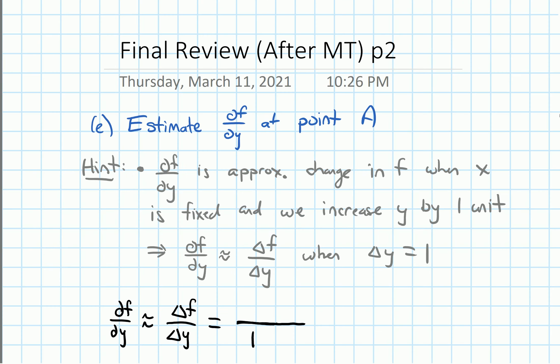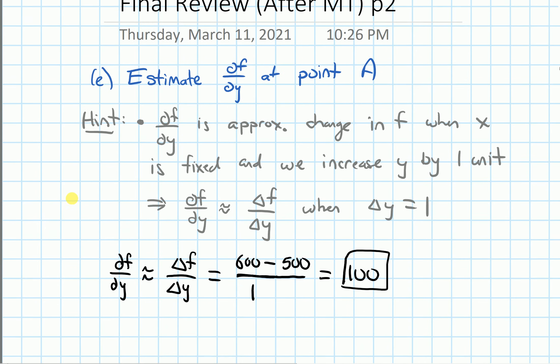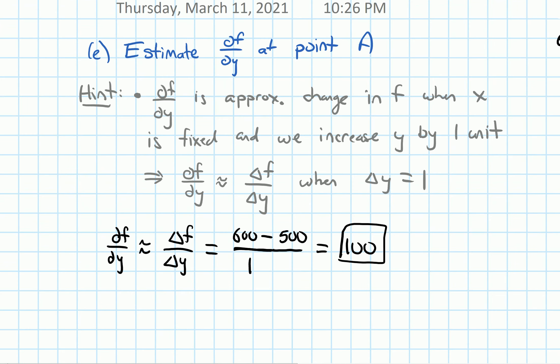So going back to our work, the change in f is that final output, which is 600, minus the initial output, which was 500. And if I simplify this, we end up with just 100. And that's the estimate of my partial derivative with respect to y. It is approximately 100.